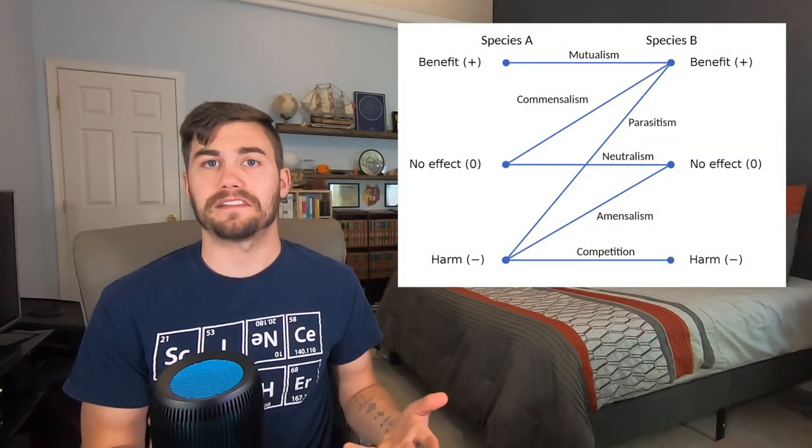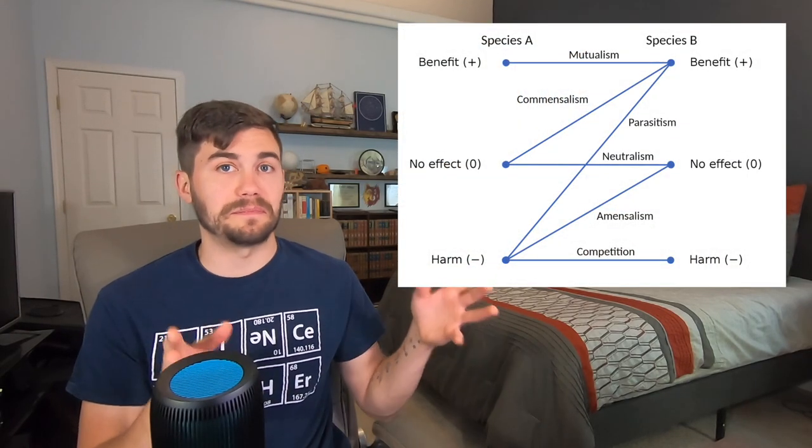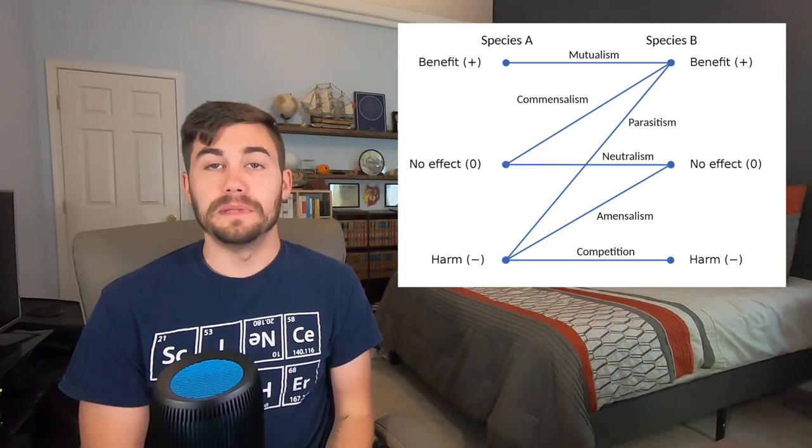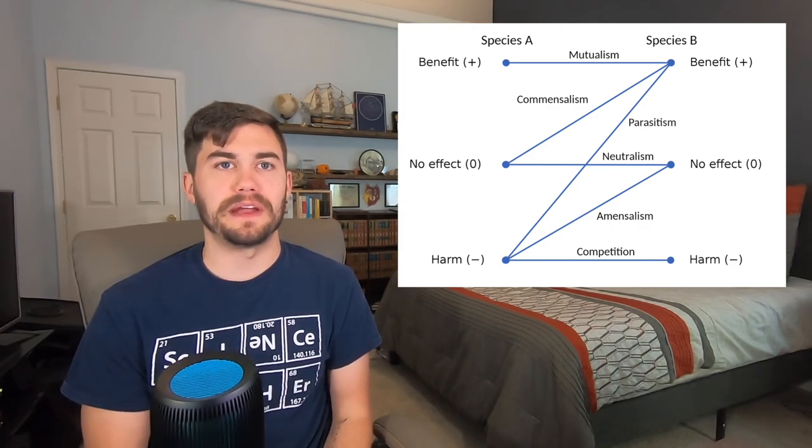When two species interact with each other, there are three possible outcomes for each species. They are either helped, harmed, or there is virtually no effect. This means there are six possible species A to species B interactions. Let's go over those. Mutualism is when both species benefit from their interaction. It may be the case that one species receives a greater benefit than the other, but if both are helped, then it is mutualistic.